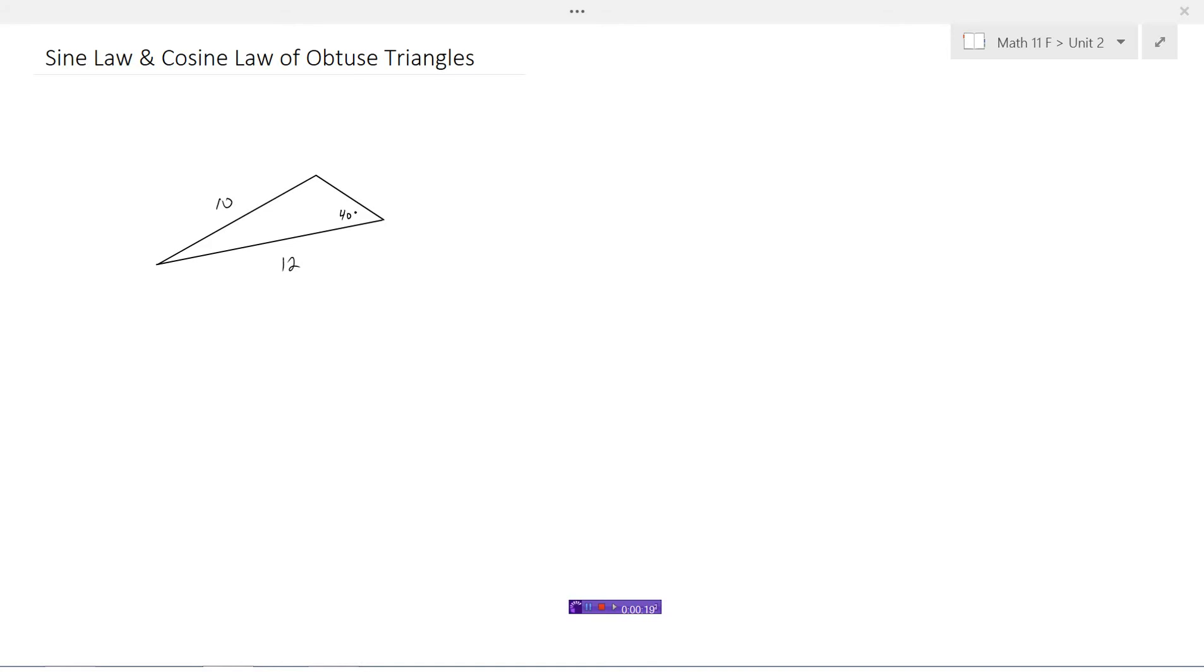It turns out we can use the sine law just like we did before. So here's the opposite pair and let's say we're trying to find this angle right here. So sine 40 degrees divided by 10 is going to equal sine of x degrees divided by 12. We're going to try to isolate x so we'll multiply both sides by 12. So now we have 12 times the sine of 40 degrees divided by 10 equals sine x.